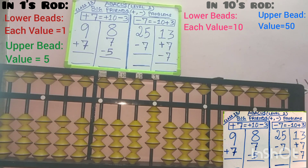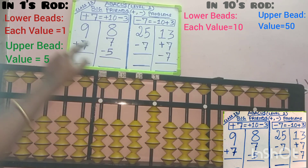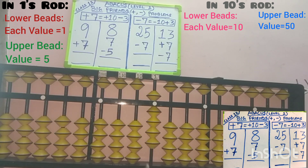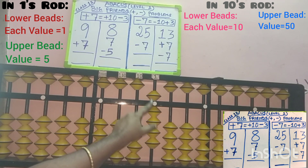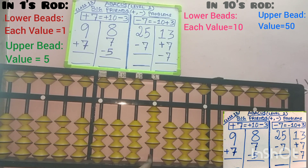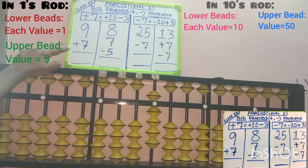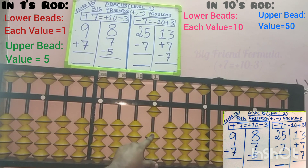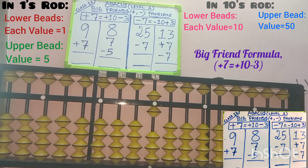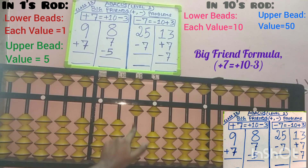Next, second row: plus 7. We have to add 7 beads in the 1s slot. Check whether 7 beads are available in the unit rod — enough beads are not available to add. We should apply the big friend formula for adding 7. 7's big friend is 3, since 7 plus 3 equals 10. In the question, plus symbol is there, so remove the friend of 7 — that is, do minus 3 in the 1s slot. Remove 3 beads from the answer point, so minus 3 is completed. While removing the friend, add the boss in the 10s place — that is, do plus 10. So plus 10 is completed.